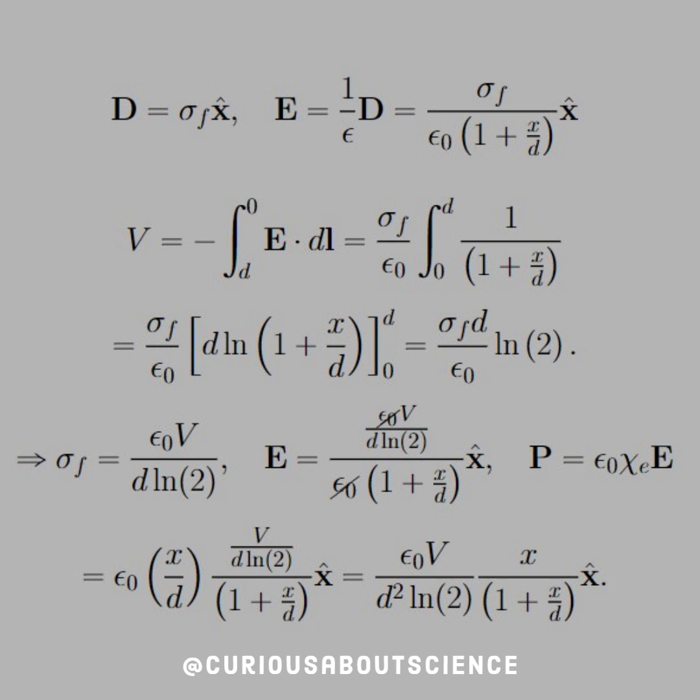And then when we plug that into the electric field, we see that the epsilons cancel, again pointed in the x hat direction. Now that we have the field in terms of V, and we got rid of the free charge sigma f, we can plug that in to find the polarization P, using the equation P equal to epsilon naught chi e times E.